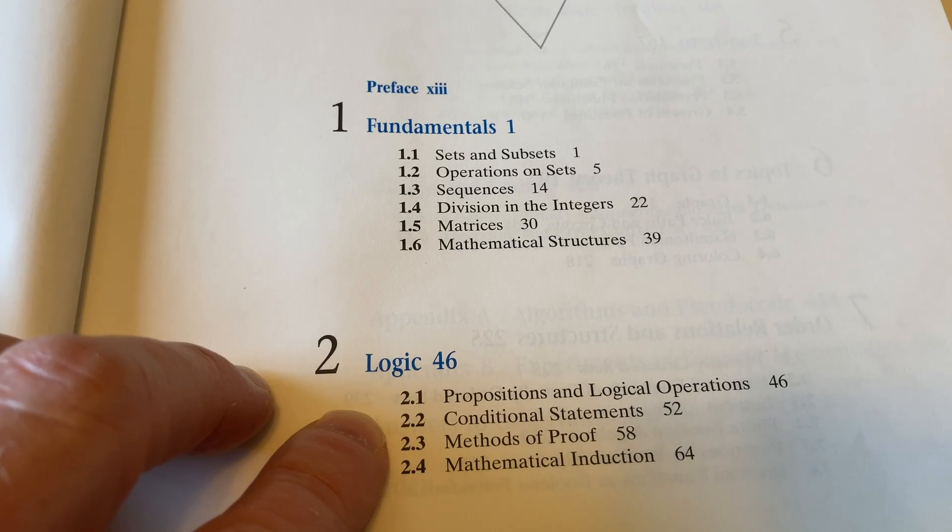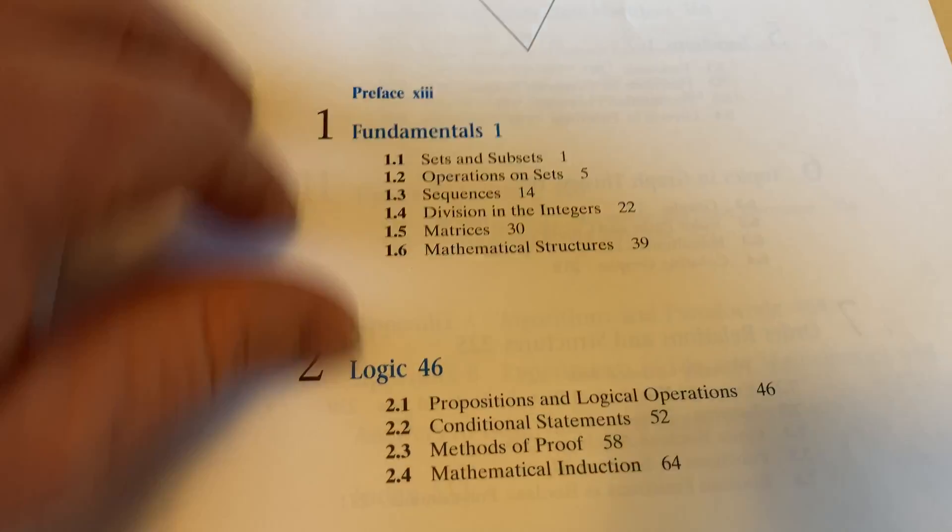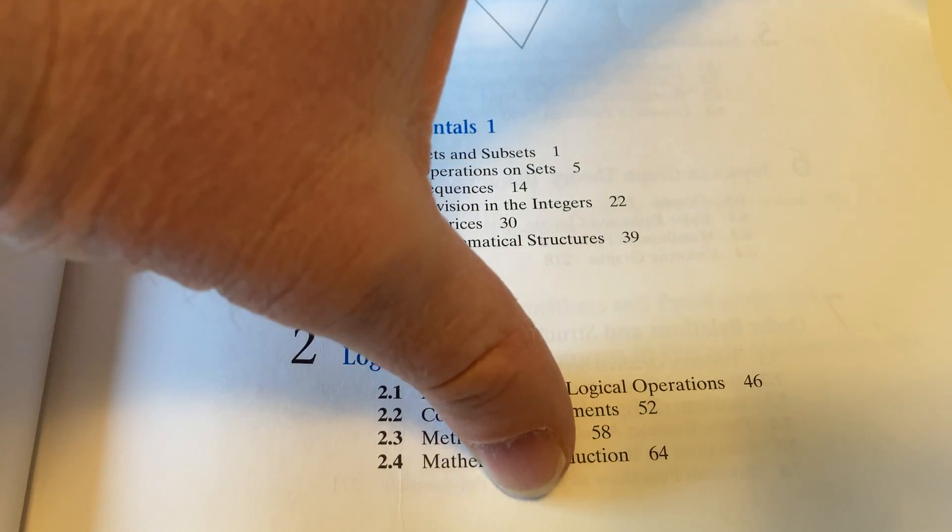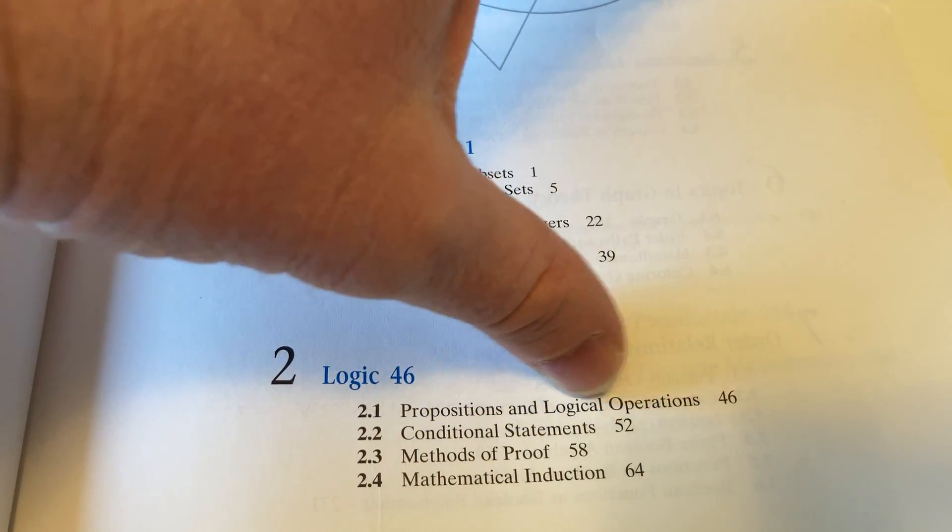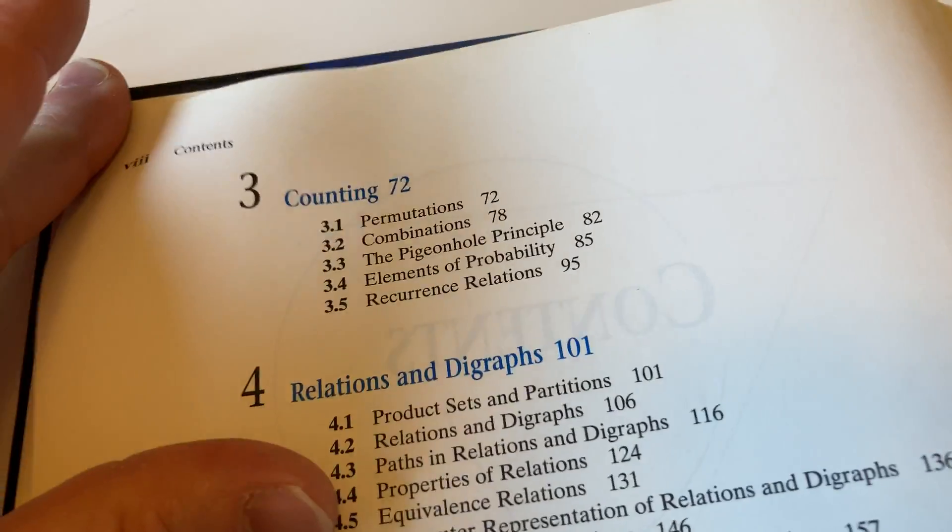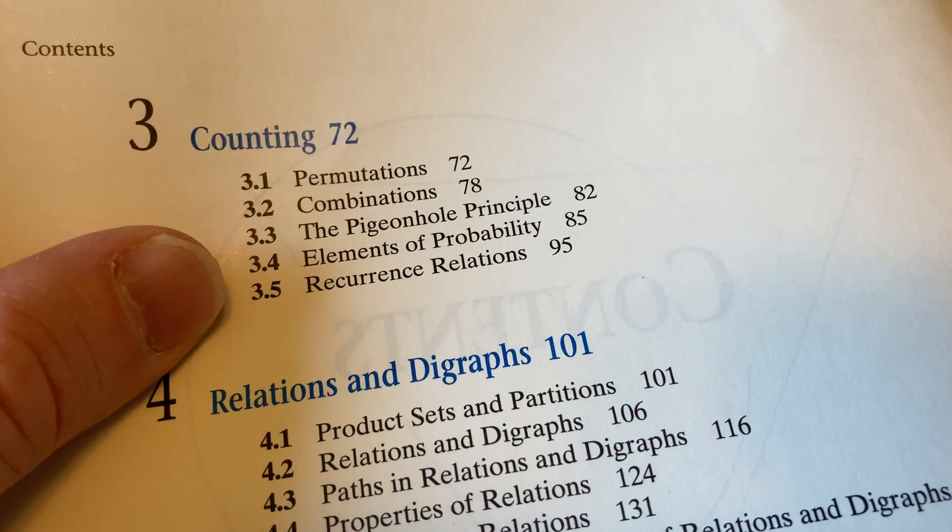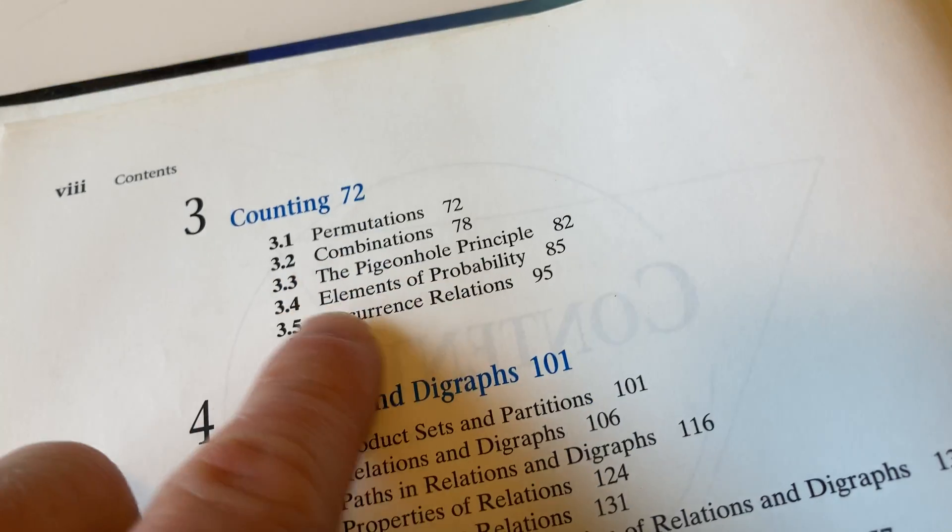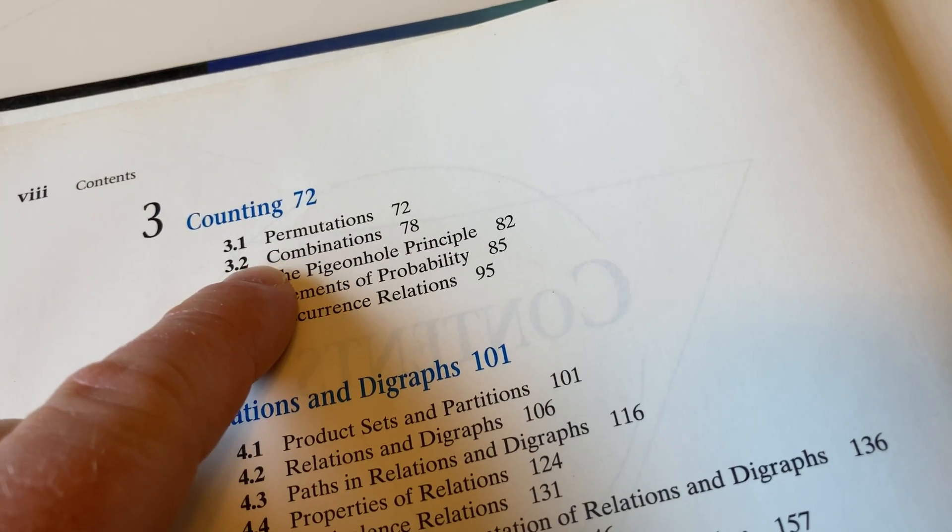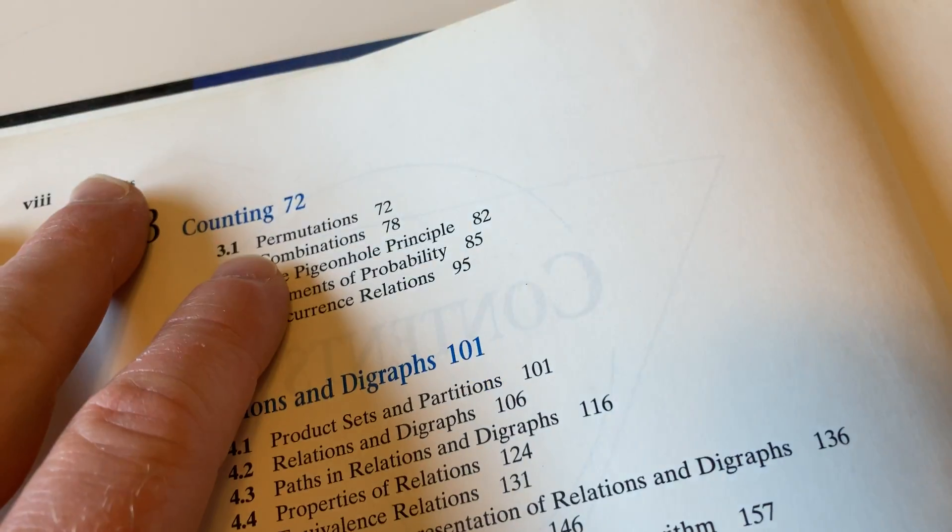Two is on logic, so it's on basic logic stuff. I've looked mainly at methods of proof and mathematical induction. I haven't really gone through 2.1 and 2.2 in this particular book. Counting includes all of the basic counting things like permutations, combinations, the all-important pigeonhole principle. So if you ever take discrete math, you're definitely going to do these things. So this is a good book because of that.